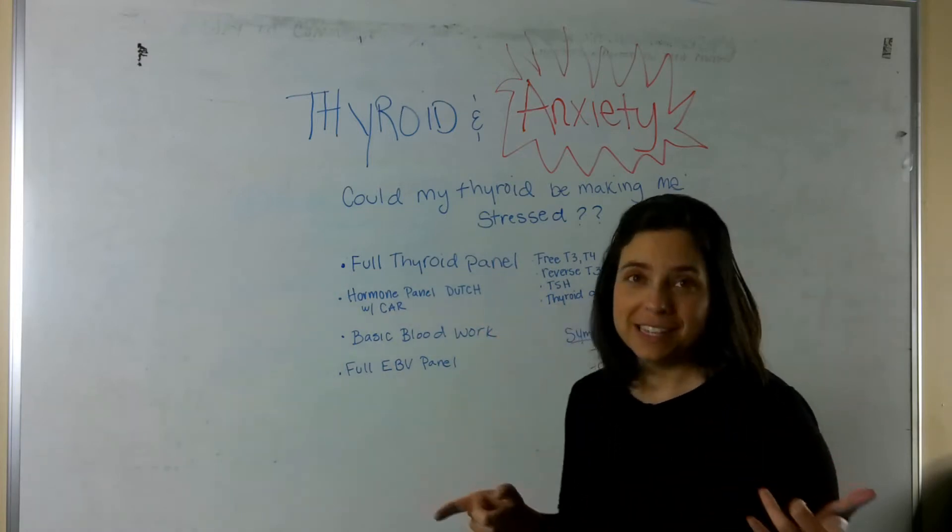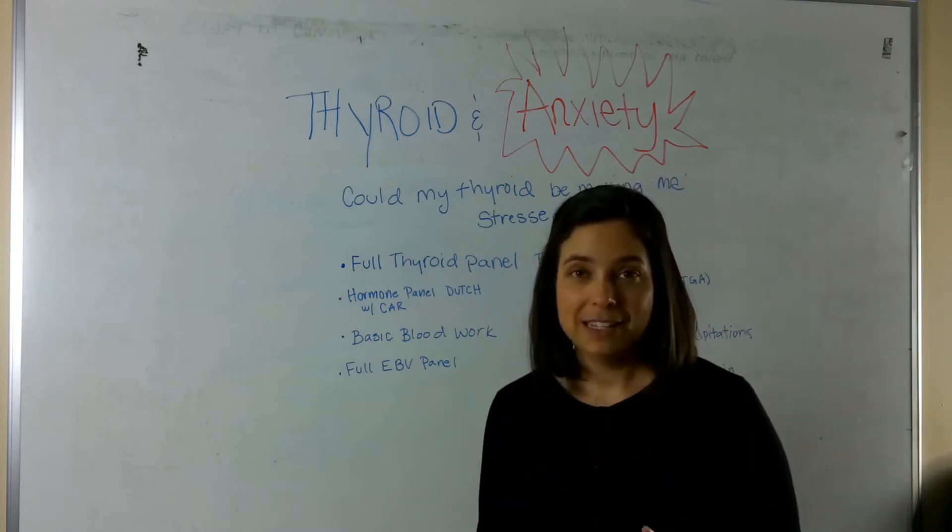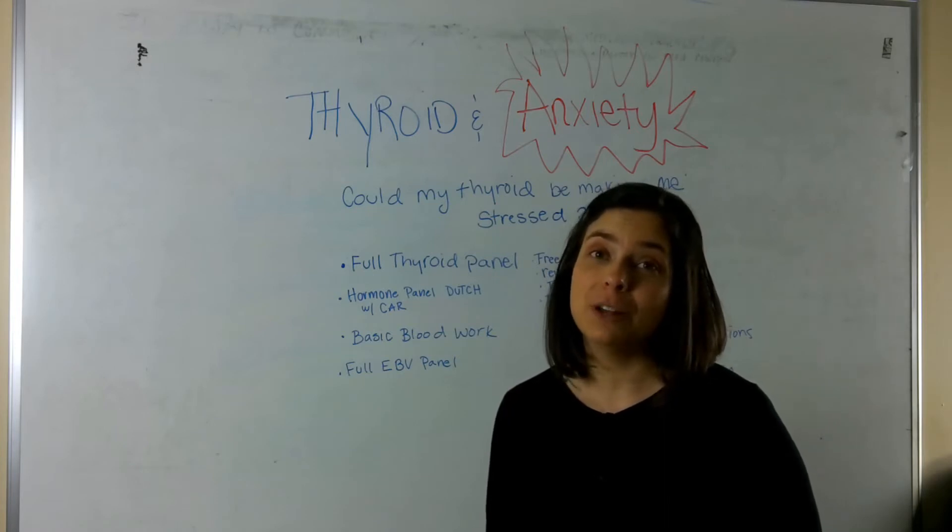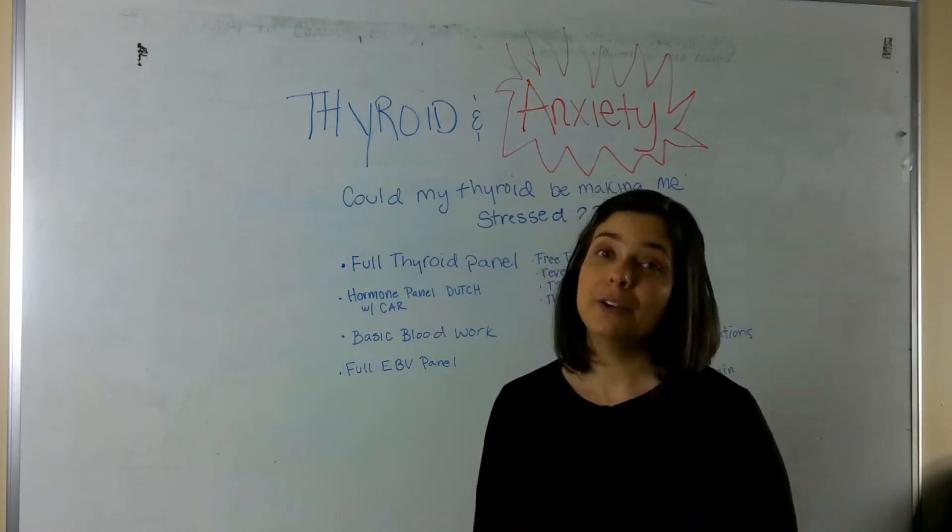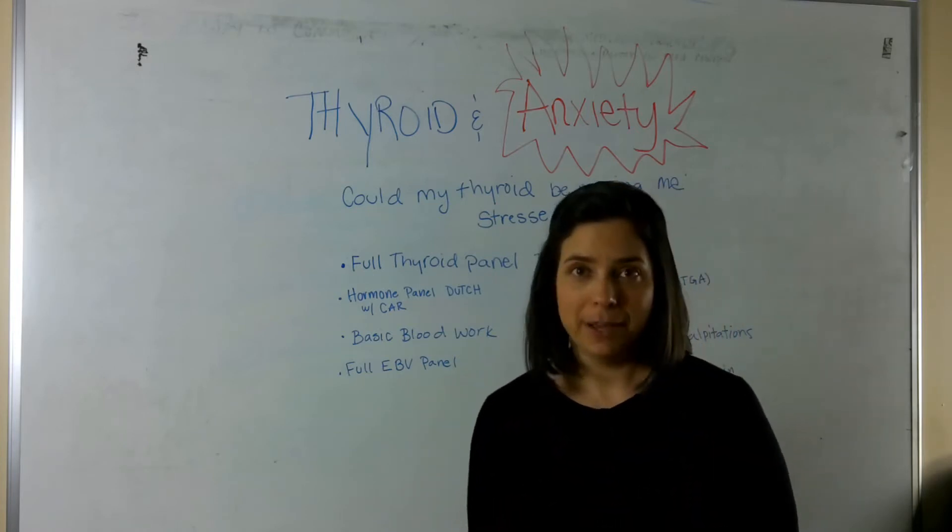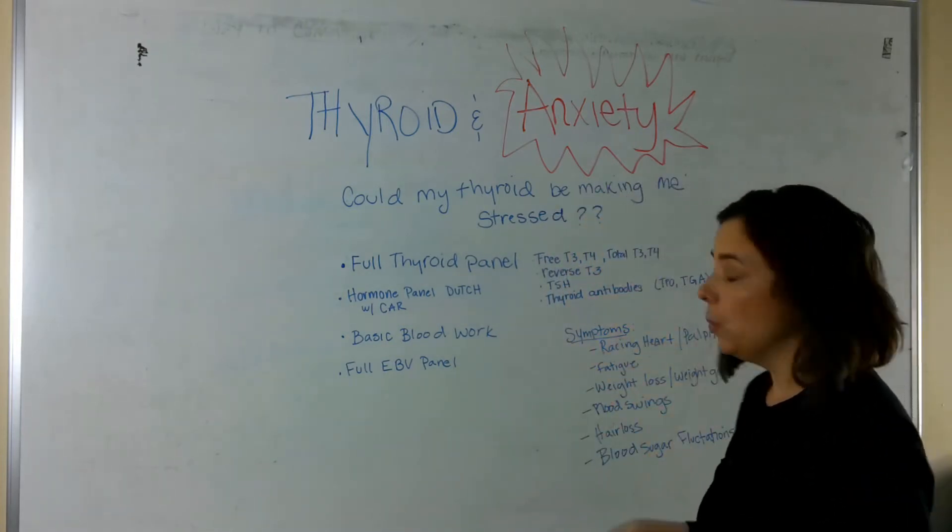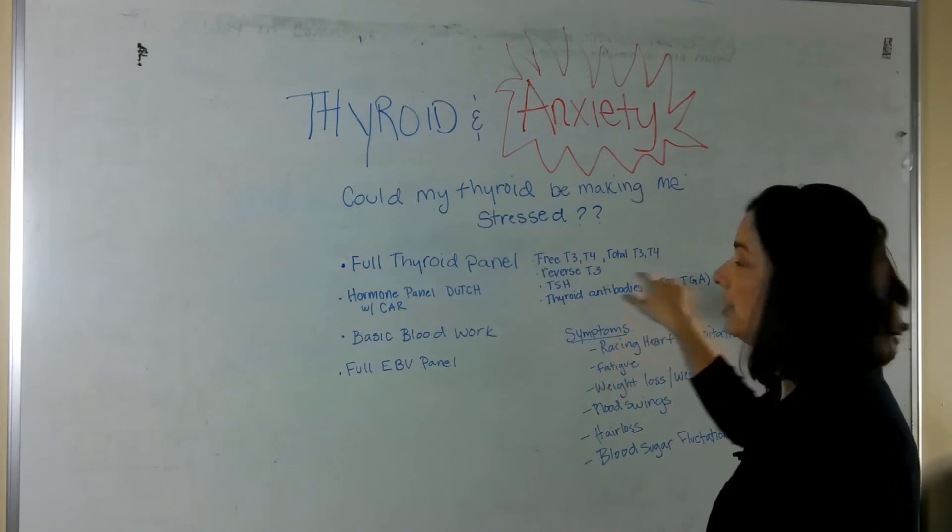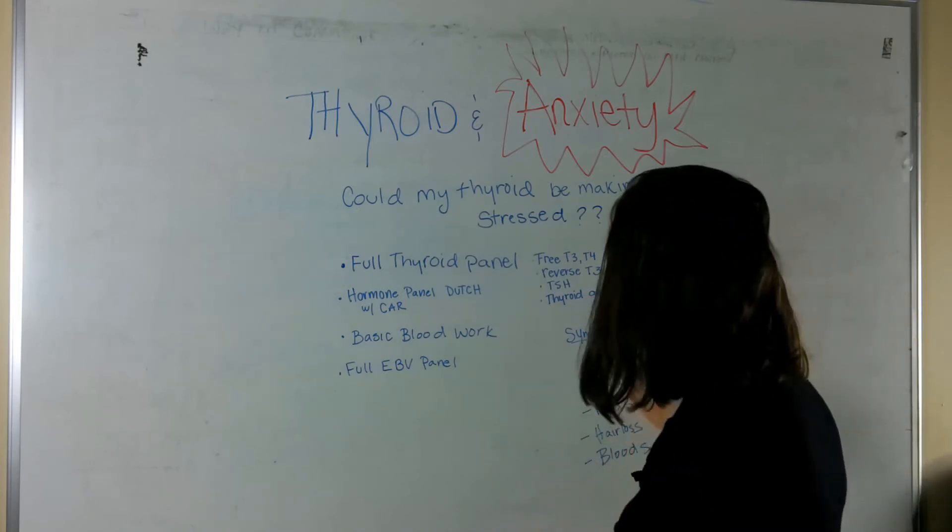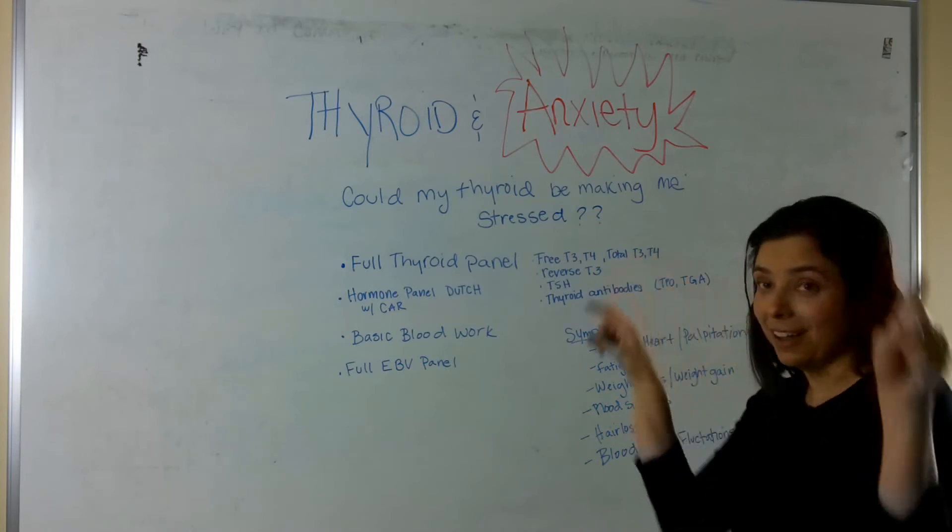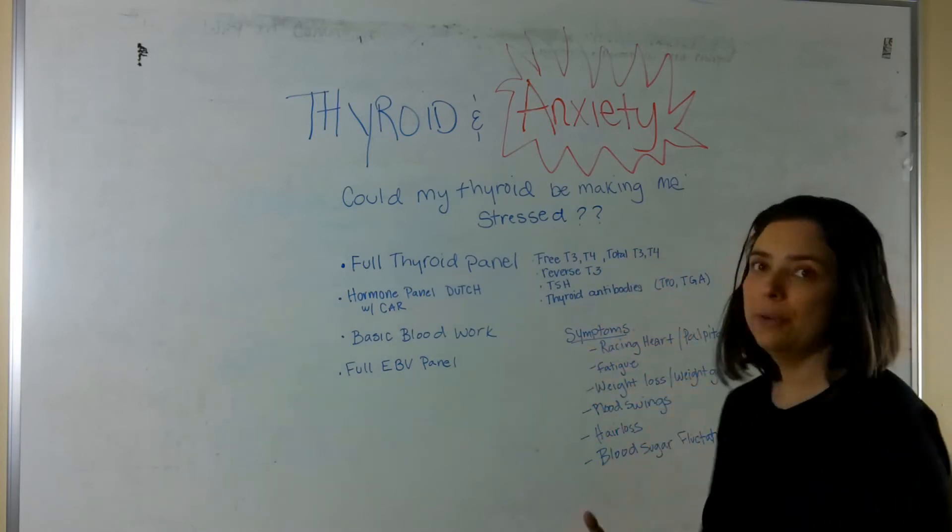And as you can see, I've written down what a full thyroid panel is, and this is what we run in our office, which actually gives us information about what your actual thyroid may or may not be doing. So, we want to run free T3 and free T4, total T3 and total T4, reverse T3 and TSH, and thyroid antibodies.